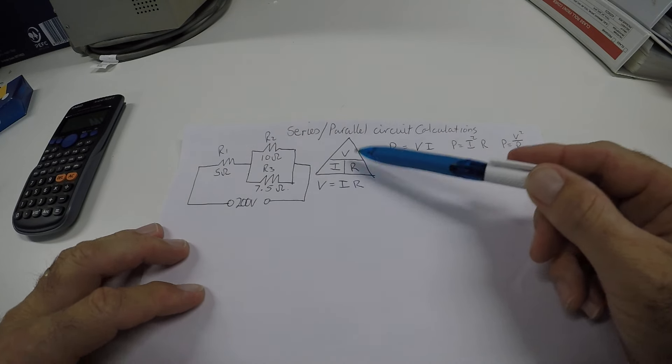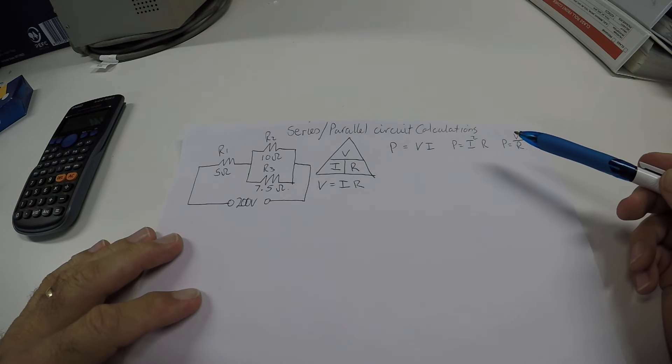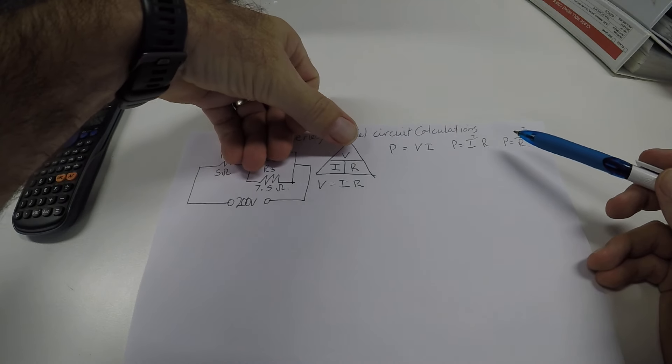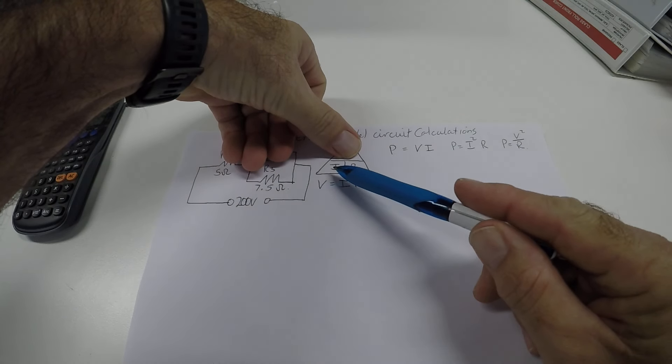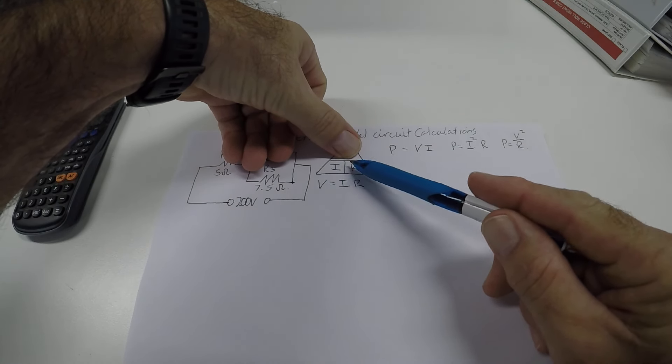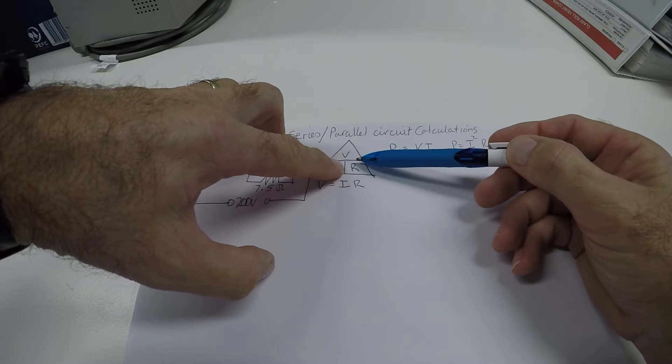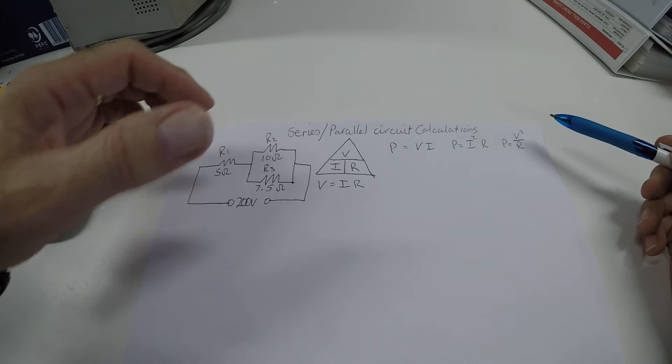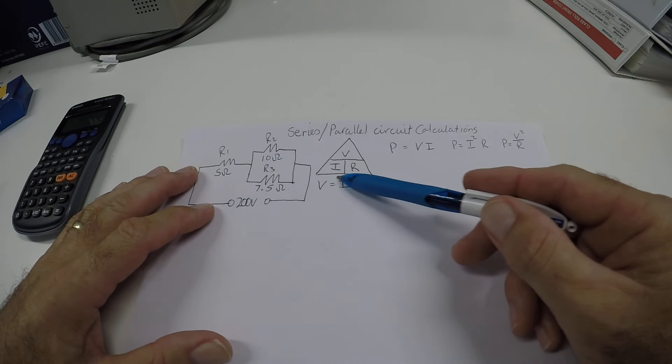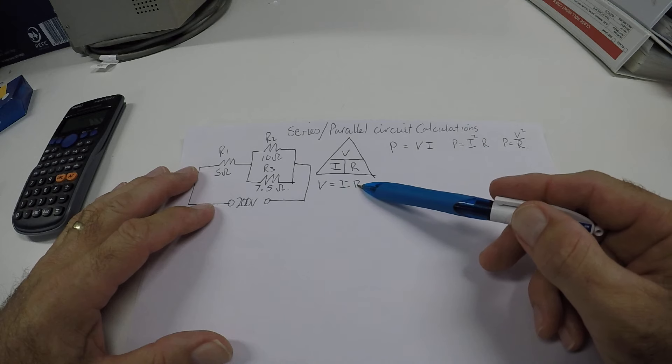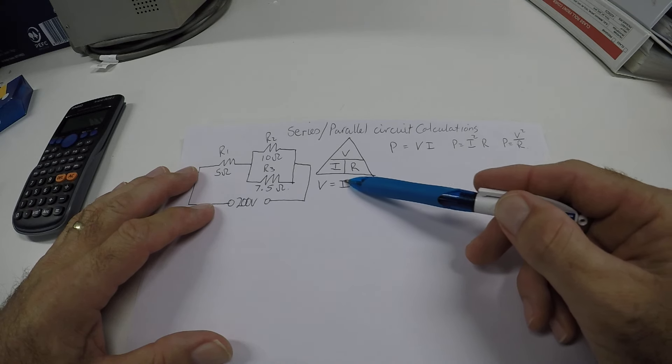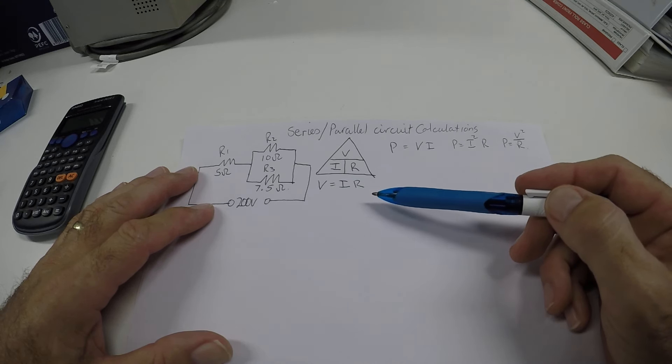I've already put the triangle here for the formulas. If I want to calculate voltage, I go voltage equals the current times the resistance, IR. If I want to do current, it's voltage divided by the resistor. Or I can remember V equals IR. If I transpose it, I can then get the other formulas from that.